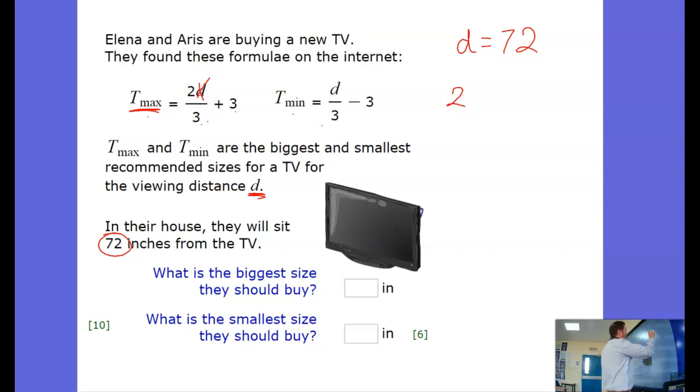Now we don't just write 272. It means this 2d means 2 times d. Kind of think of it as putting brackets around the d. So this is 2 times 72 then divide by 3 and then plus 3.